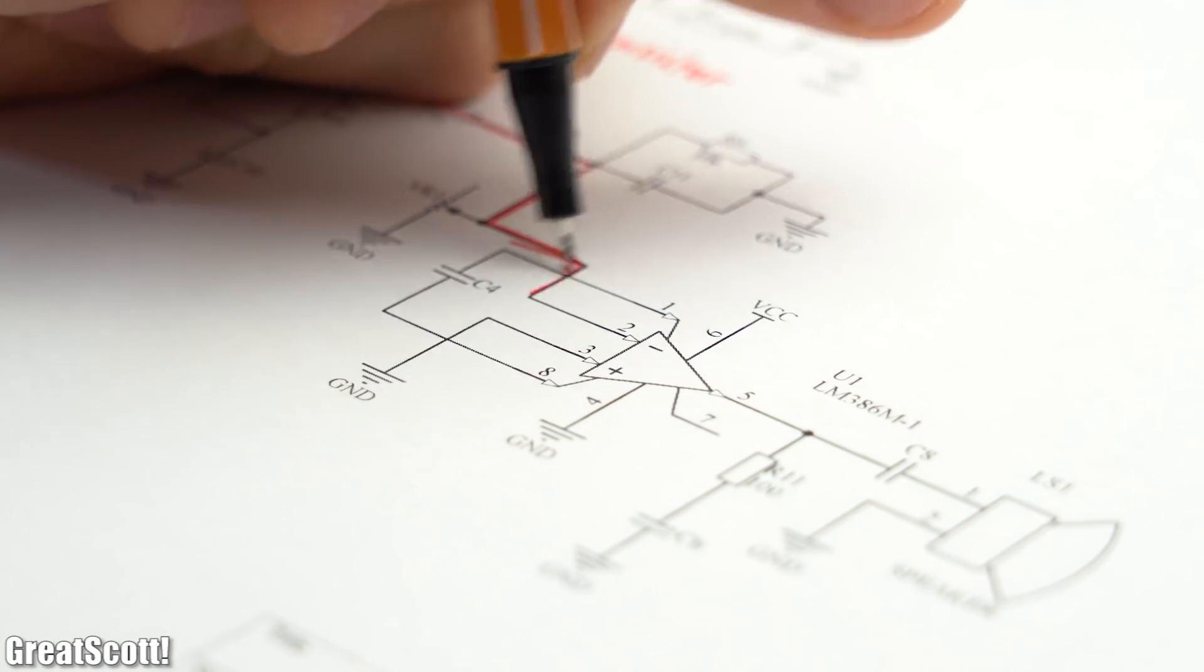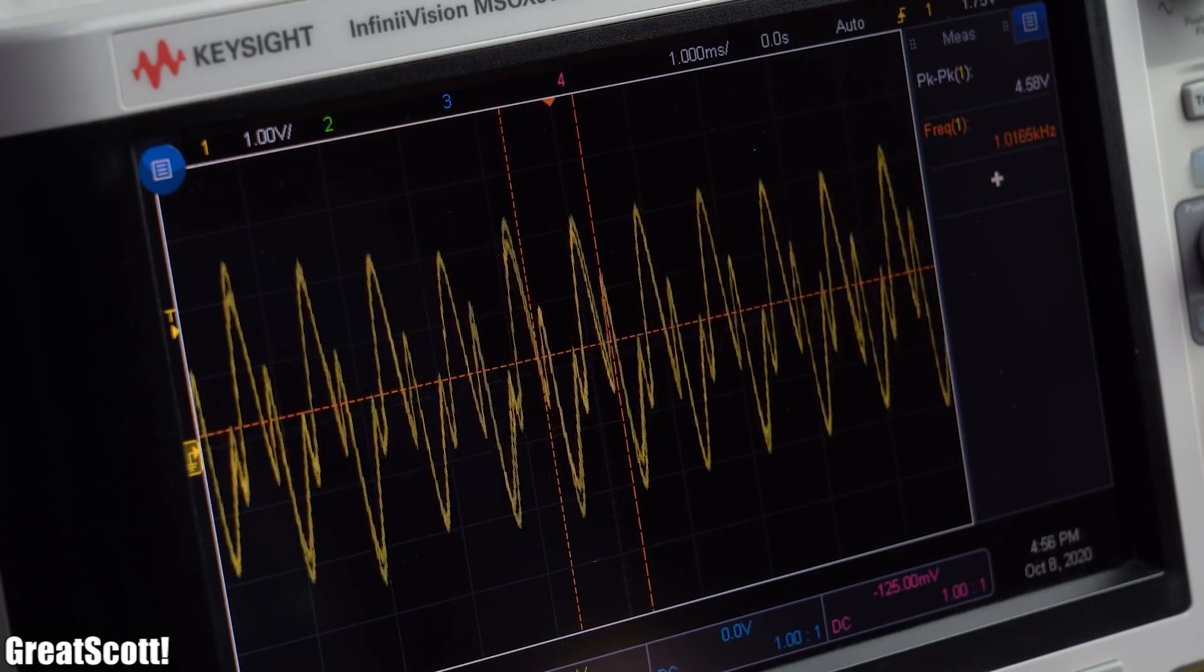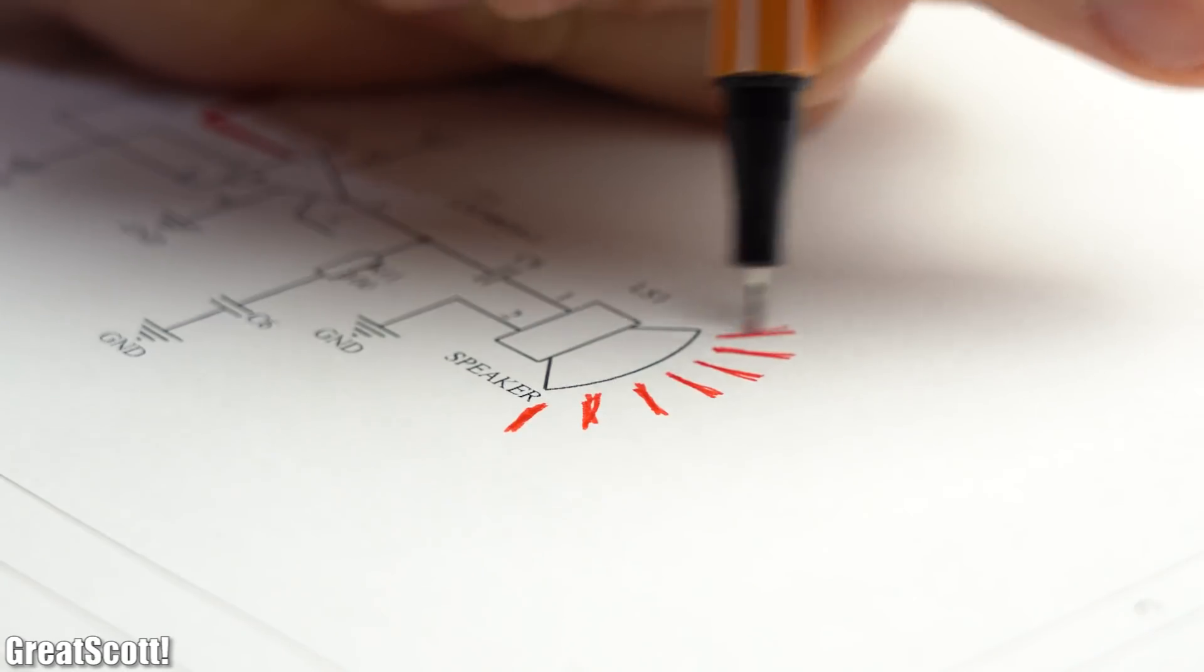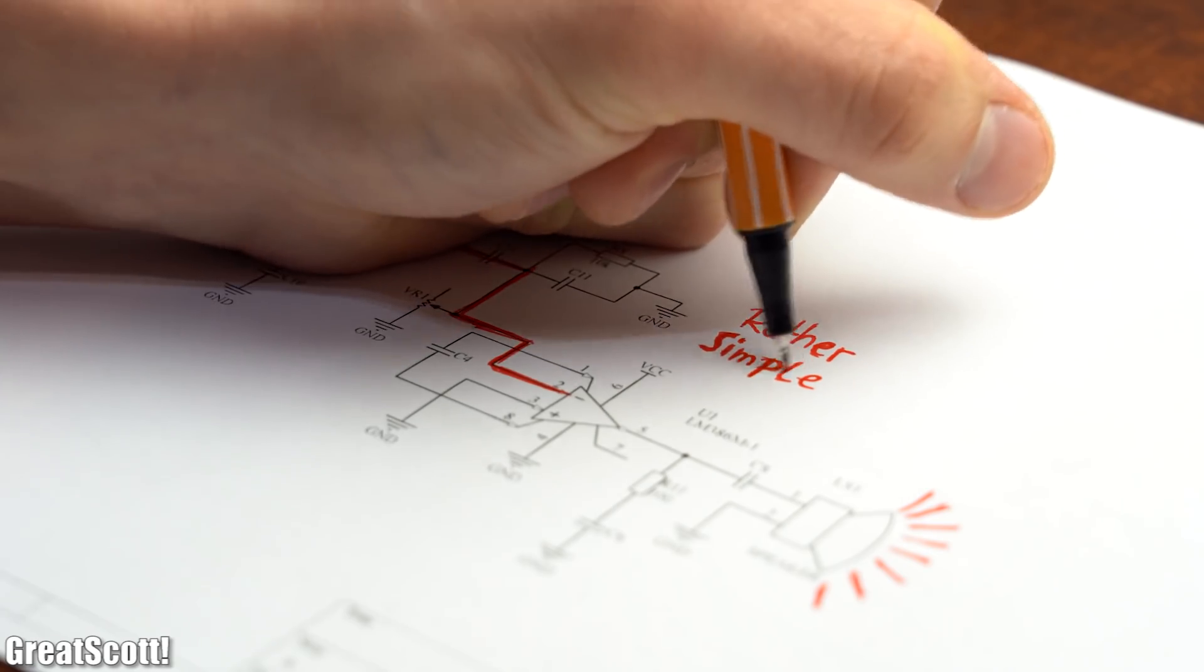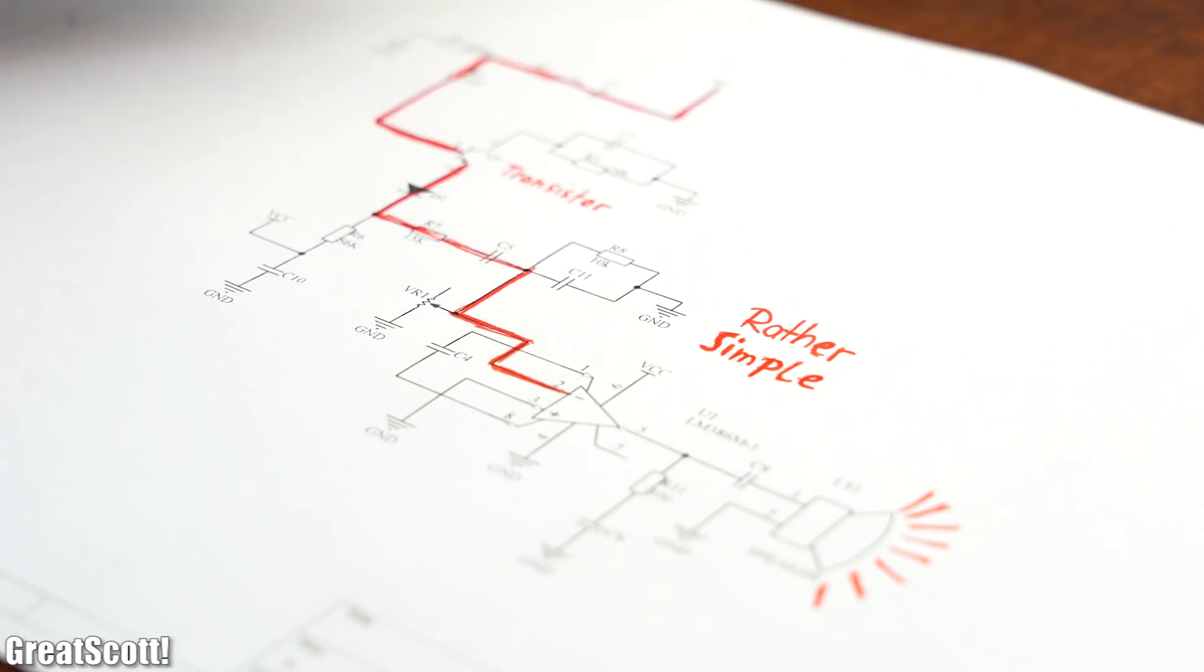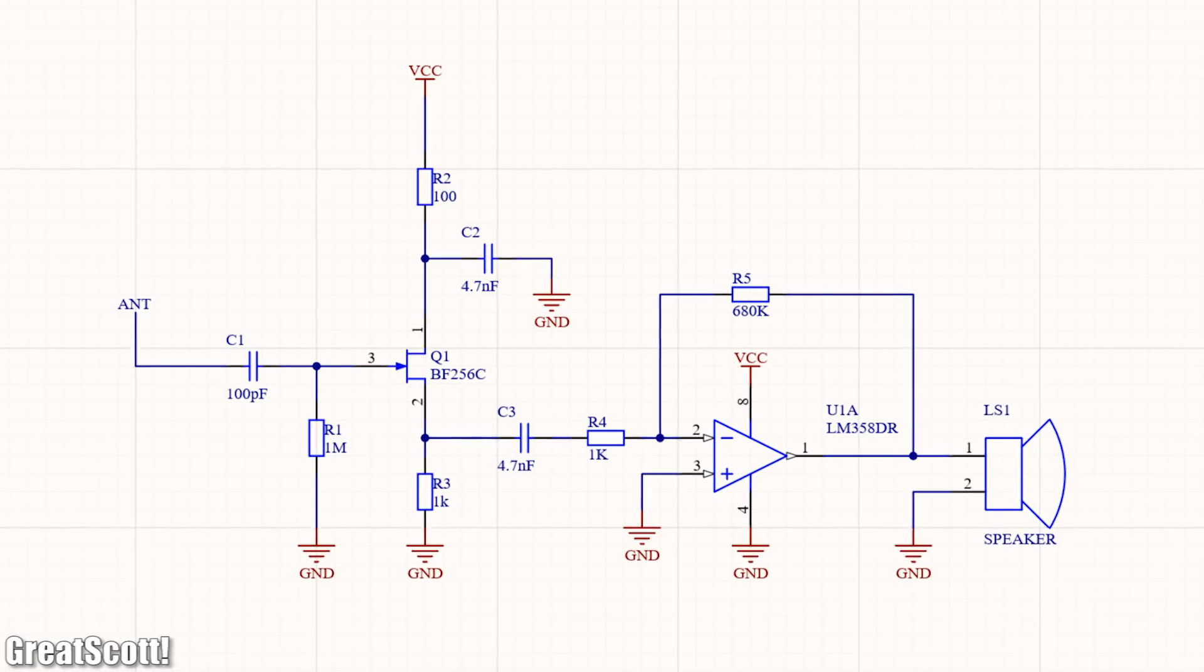This signal is then fed into the audio amplifier, which obviously amplifies the signal and connects it to a speaker for playback. I have to say that this circuit is already pretty minimalistic, but I wanted to go with even less components for my DIY circuit.